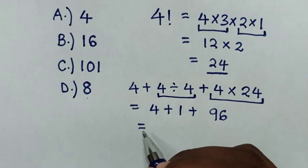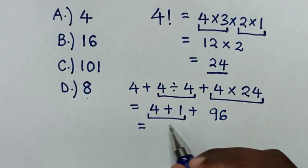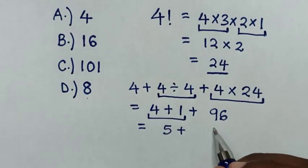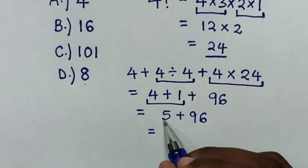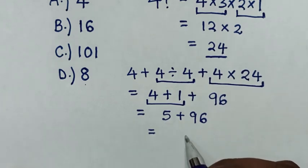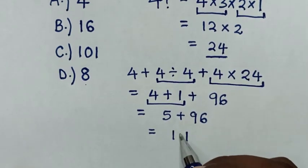Then it will be equal to 4 plus 1 is 5, then plus 96. Then it will be equal to 5 plus 6 is 11, so go with 1, 9 plus 1 is 10.